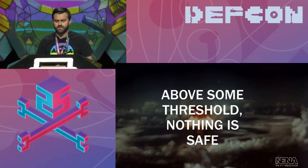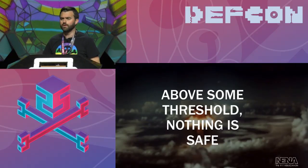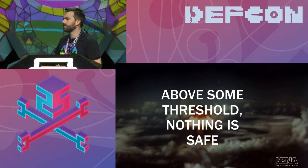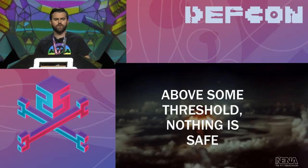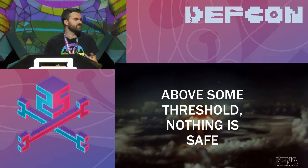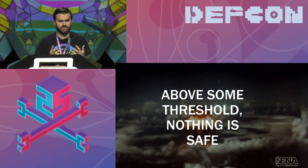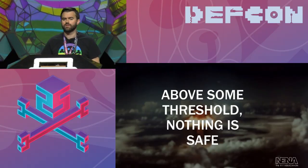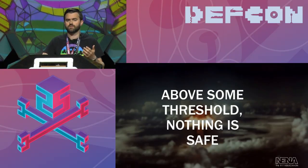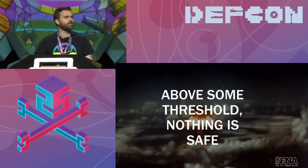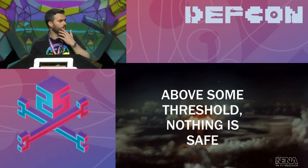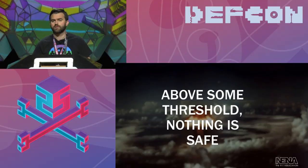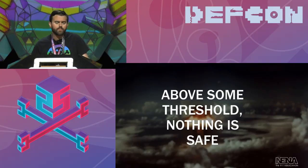The big takeaway from all of this is that above some threshold, nothing is really safe. There is some traffic threshold when it really just doesn't matter anymore what you're doing — you're just not going to be able to defend against it. We happened to find that in the telephone network and the 911 system in this instance, because we're a softer target. We have this vulnerability we knew about — when we've only got maybe 23 trunks in some places, we knew about that.